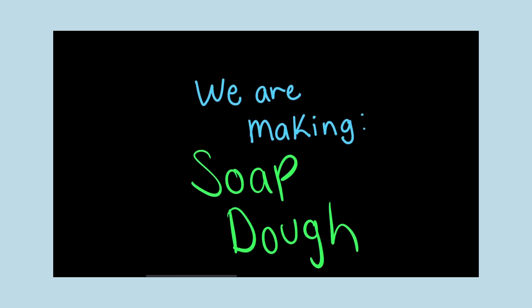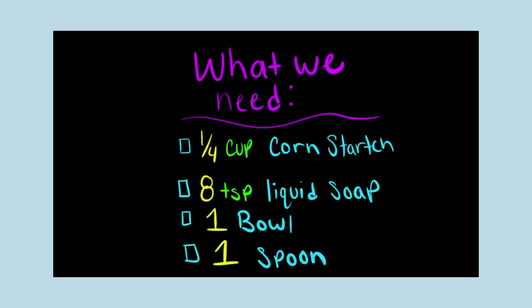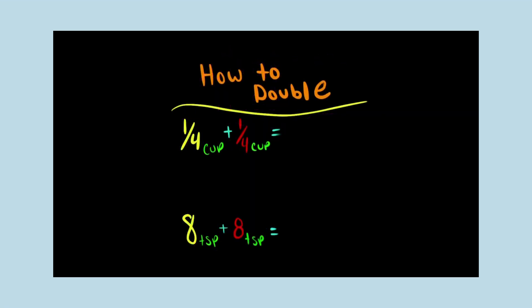To make soap dough, we will need one-fourth of a cup of cornstarch, 8 teaspoons of liquid soap, 1 bowl, and 1 spoon. I want to make enough soap dough for my family too, so I'm going to need to double the recipe.